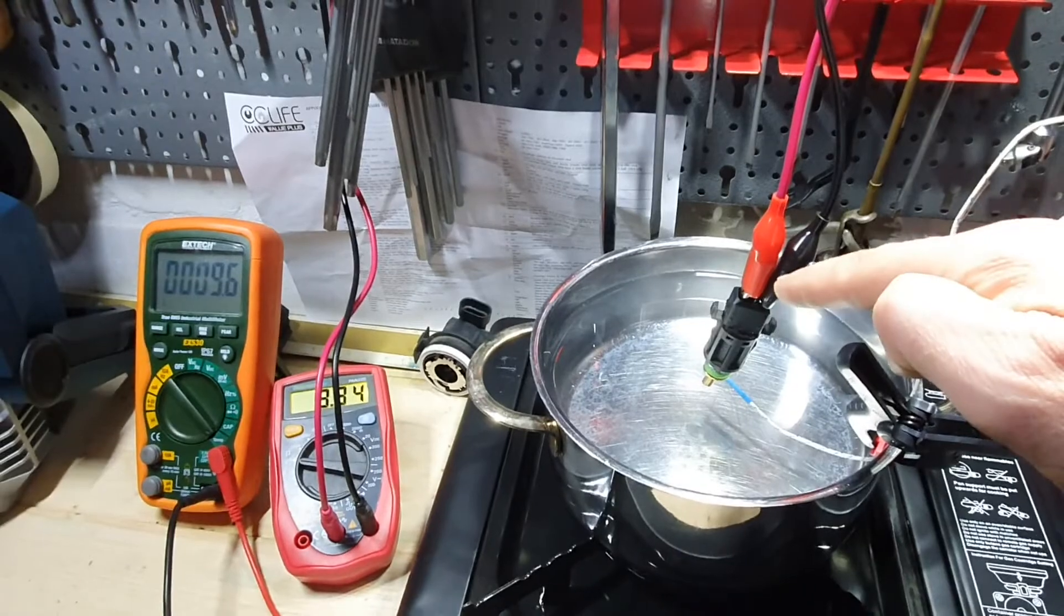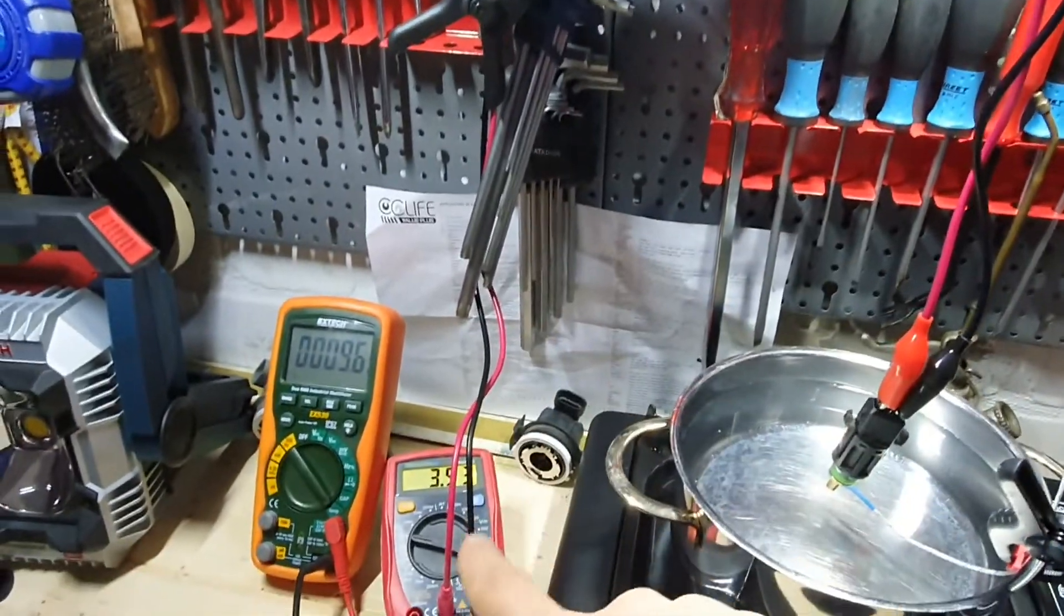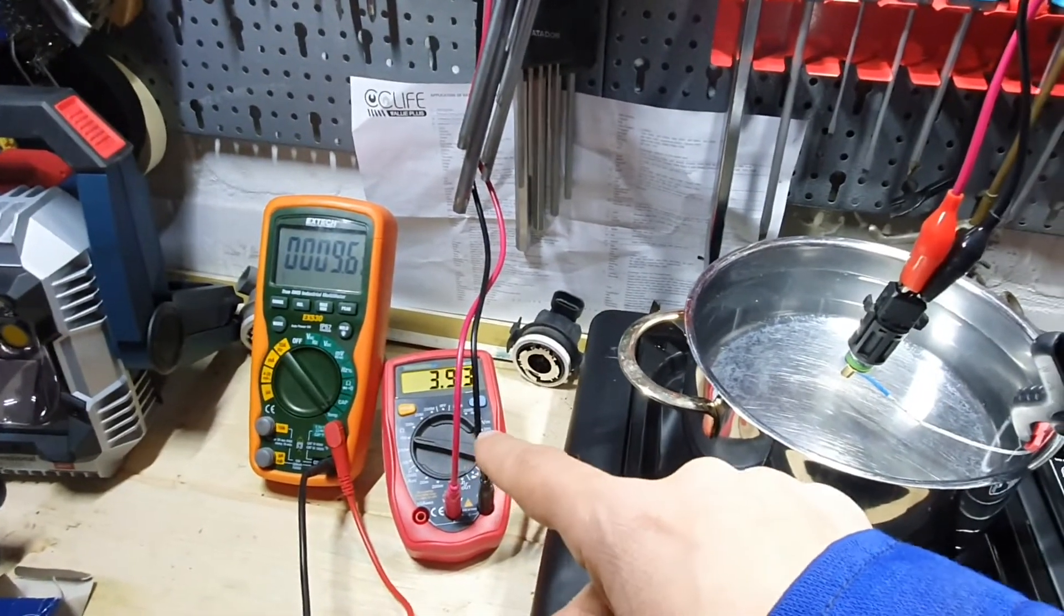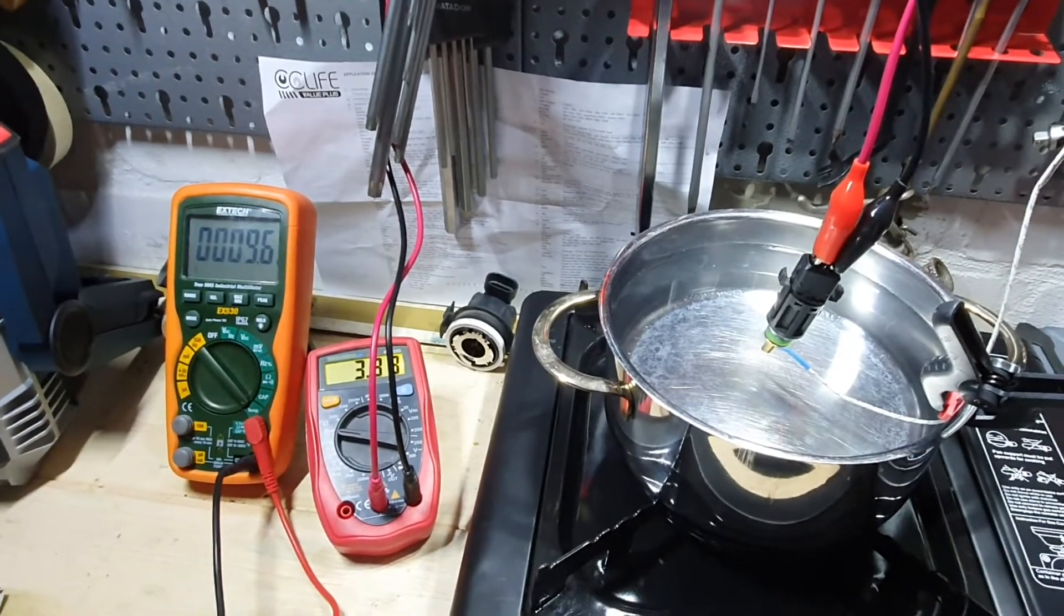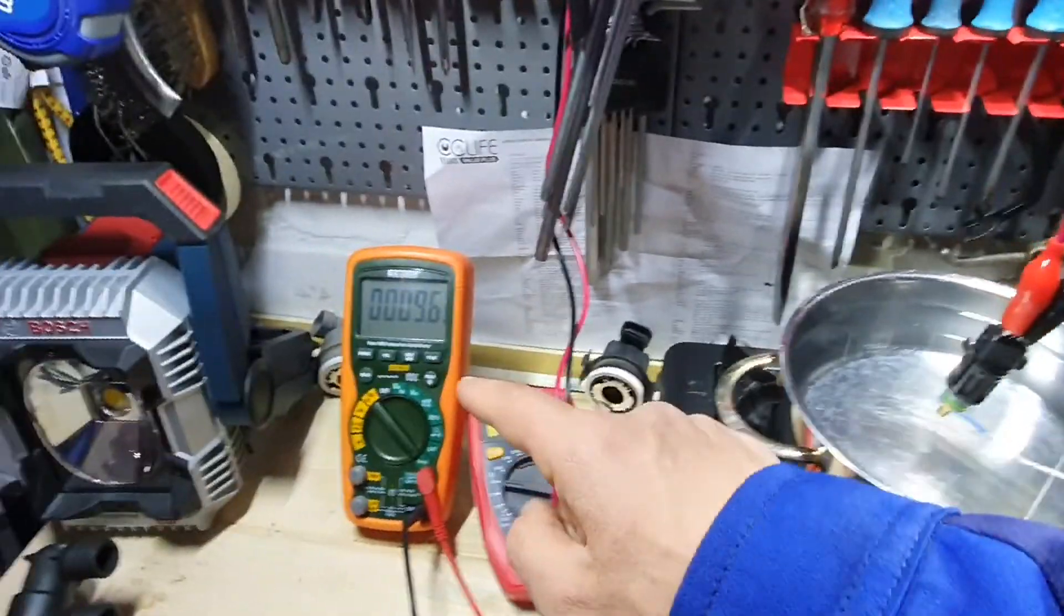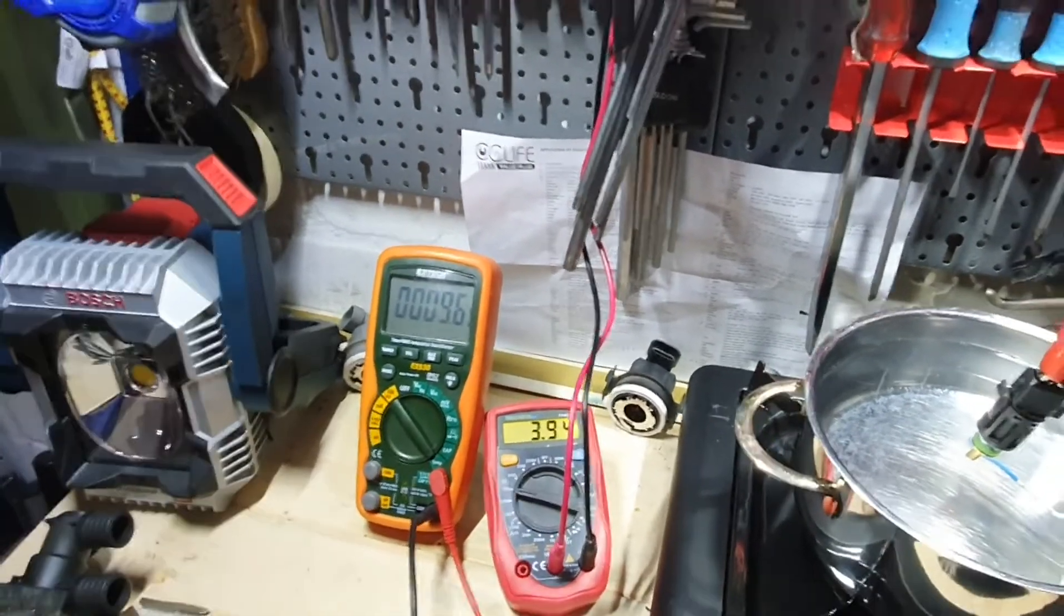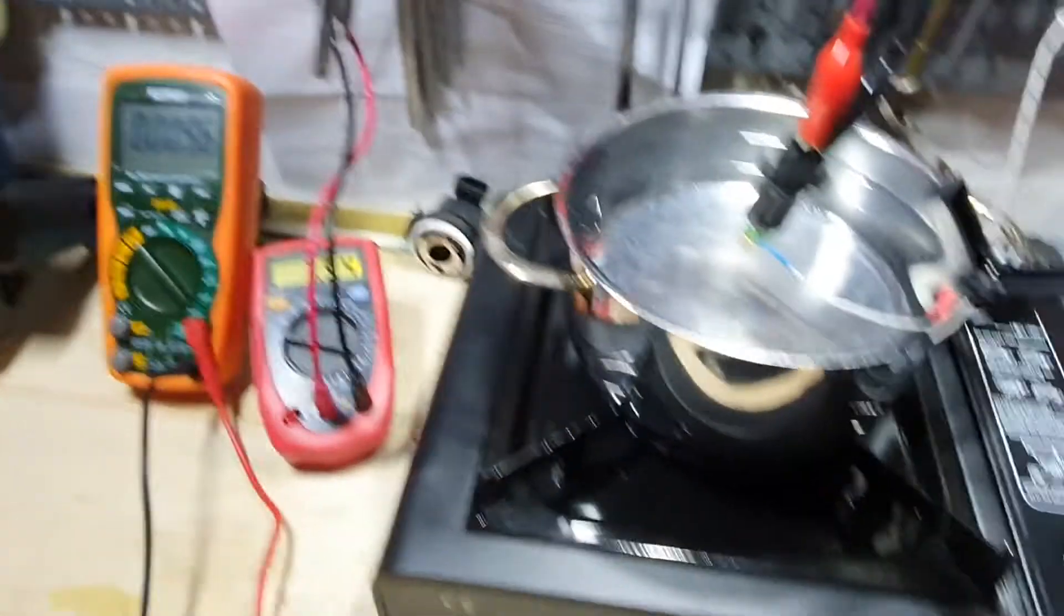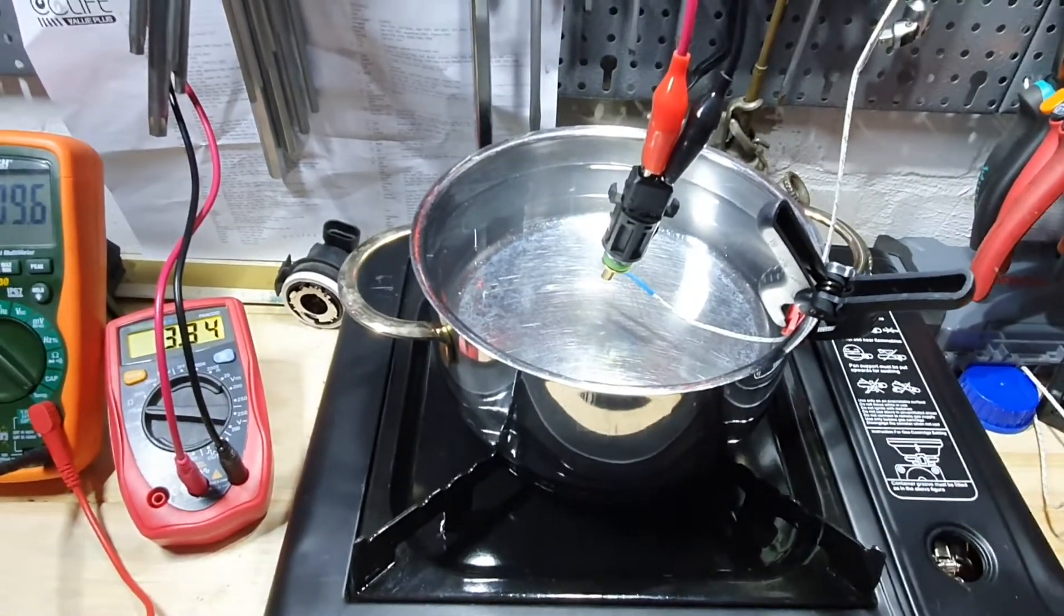The temperature sensor is connected with two leads to that small multimeter. We will be reading the resistance of the temperature sensor through this experiment, the resistance change actually. And this probe is the temperature probe which is connected to the big multimeter. We are reading the temperature of the water in degrees Celsius, as you can see here.